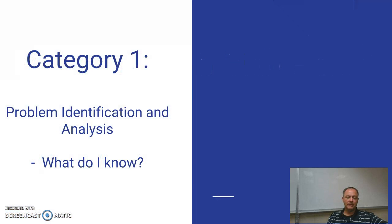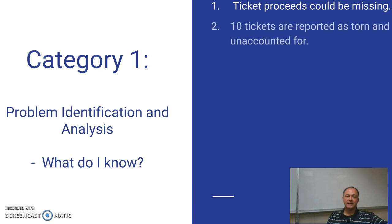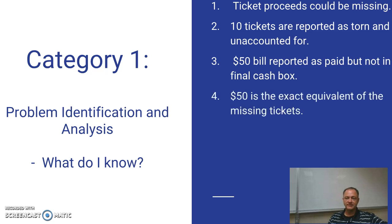Identifying the problem: I know that there could be some ticket proceeds missing because a $50 bill was given by a parent named Mr. Dewis, and I don't see it. I know that 10 tickets are reported as torn and unaccounted for — they were discarded, so they are nowhere to be found. The $50 was reported as paid but is not in the cash box at the end of the night, and that $50 is the exact equivalent of the missing tickets, so it would be very easy for someone to take that $50 bill and put it in their pocket and account for it with the missing tickets.